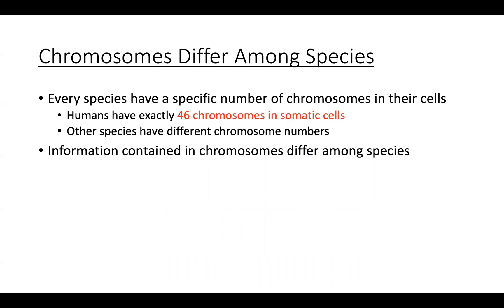Chromosomes can differ amongst species. Every species has a specific number of chromosomes in their cells. The human has 46 chromosomes in somatic cells — that number does not change in normal humans. There are deviations from the norm that lead to genetic abnormalities. Other species have different numbers of chromosomes — a dog, rabbit, fish, and turtle may all have different numbers. The information contained in chromosomes can also differ amongst species.